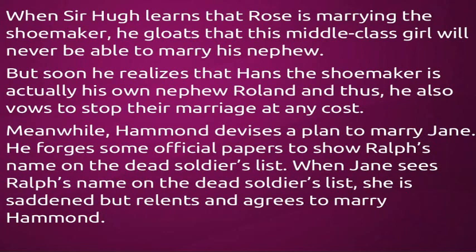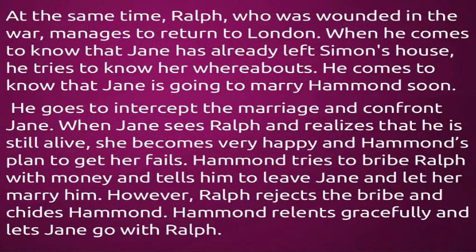Meanwhile, Hammond devises a plan to marry Jane. He forges some official papers to show Ralph's name on the dead soldiers list. When Jane sees Ralph's name on the dead soldiers list, she is saddened but relents and agrees to marry Hammond. At the same time, Ralph, who was wounded in the war, manages to return to London. When he comes to know that Jane has already left Simon's house, he tries to find her whereabouts and learns that Jane is going to marry Hammond soon. He goes to intercept the marriage and confronts Jane. When Jane sees Ralph and realizes that he is still alive, she becomes very happy and Hammond's plan fails. Hammond tries to bribe Ralph with money and tells him to leave Jane and let her marry him. However, Ralph rejects the bribe and strikes Hammond. Hammond relents gracefully and lets Jane go with Ralph.